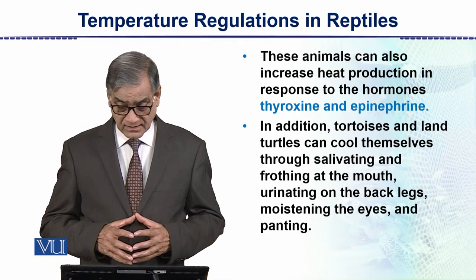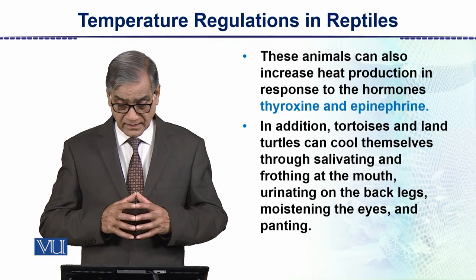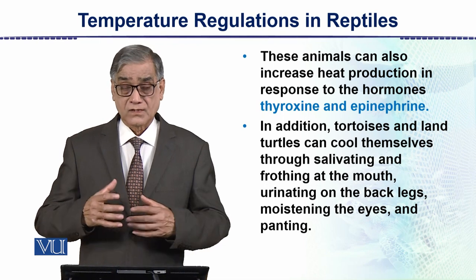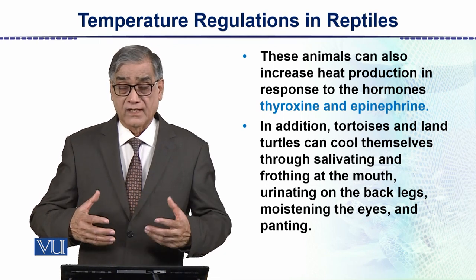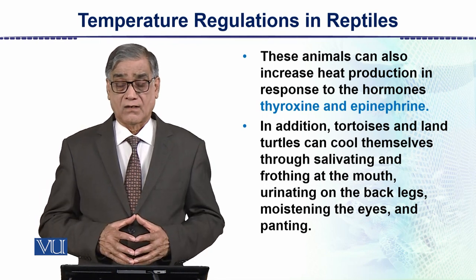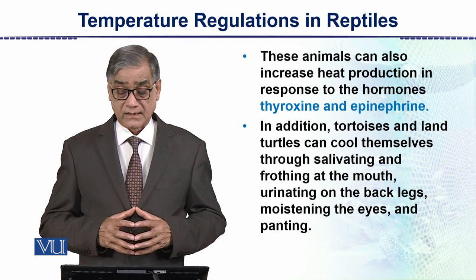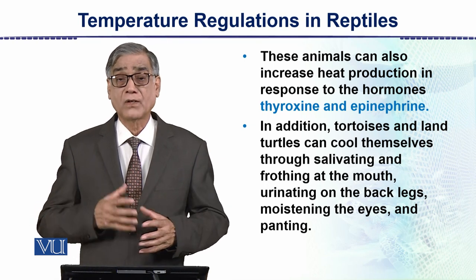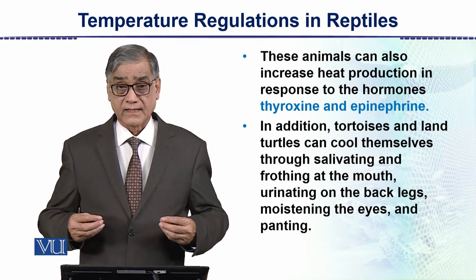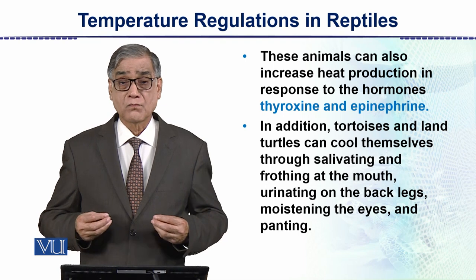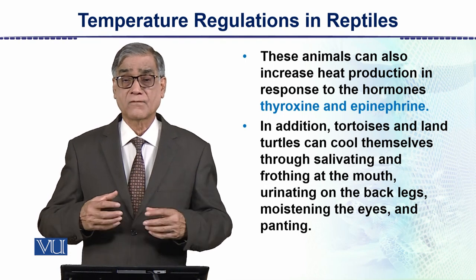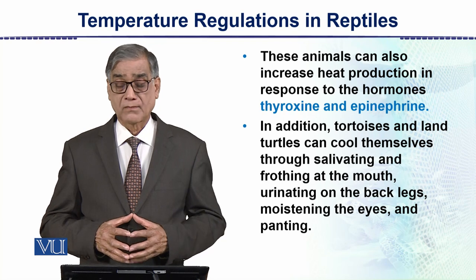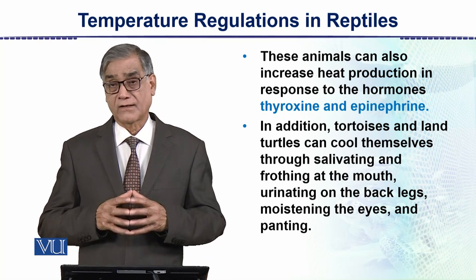These animals can also increase heat production in response to temperature changes. This is another way they regulate temperature — hormonally, they can produce more heat and speed up their metabolism, especially through hormones such as thyroxin and epinephrine.